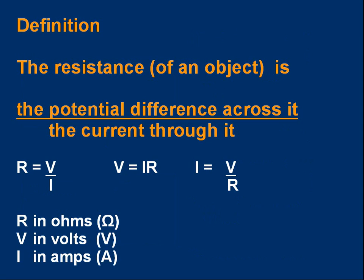Let's look at a definition of resistance. The definition is: the resistance of any object is the voltage, the potential difference across it, divided by the current through it. Simple as that. That's what we used in the calculation on the previous slide.